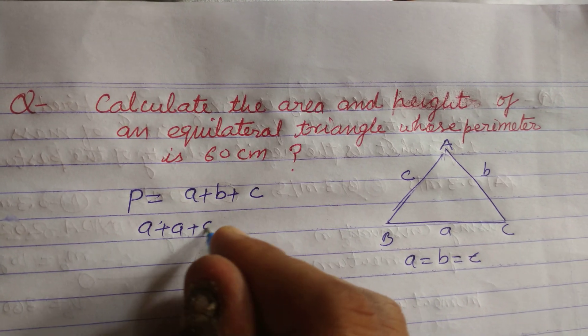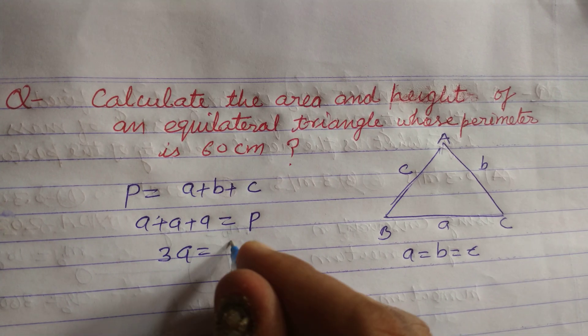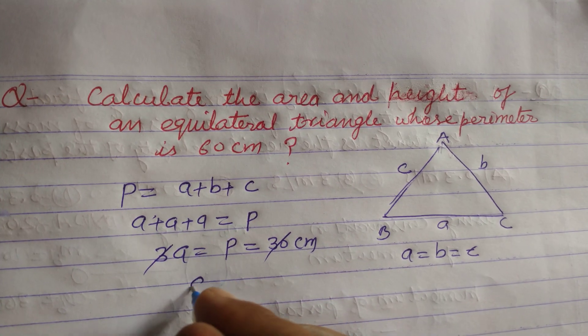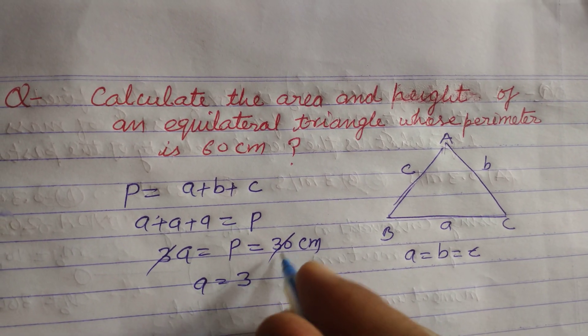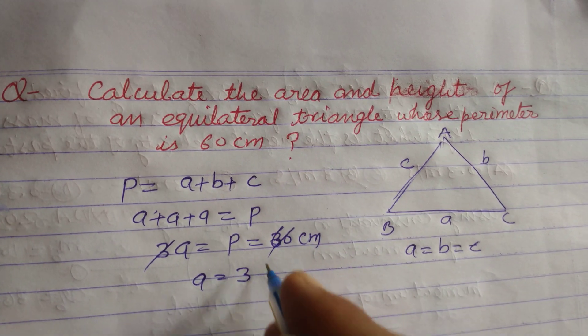So a plus a plus a equal to perimeter. This is 3a equal to perimeter, and perimeter is given 60 cm, therefore a equal to 20 cm. So a side of the triangle is 20 cm.